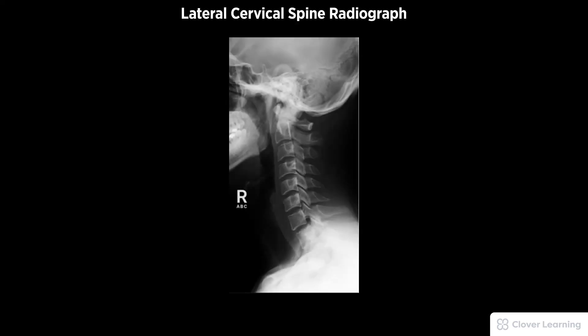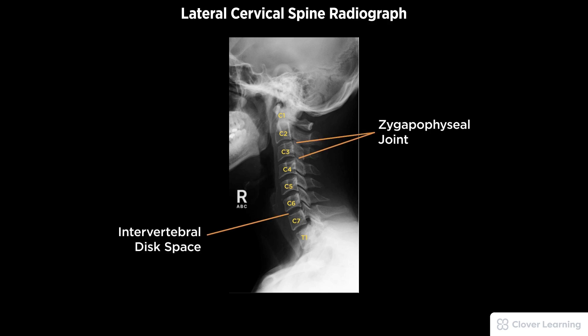A diagnostic lateral cervical spine must be free of motion and rotation. Demonstrated anatomy to include seven cervical vertebrae and the upper portion of T1, superimposed zygapophyseal joints and open intervertebral disc spaces, and spinous processes in profile with proper visualization of soft tissue and bony detail.